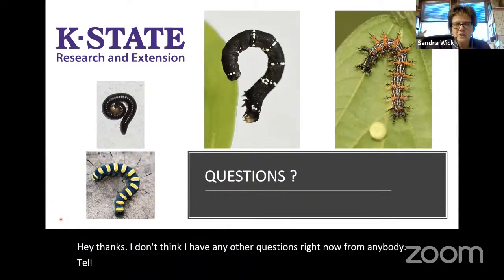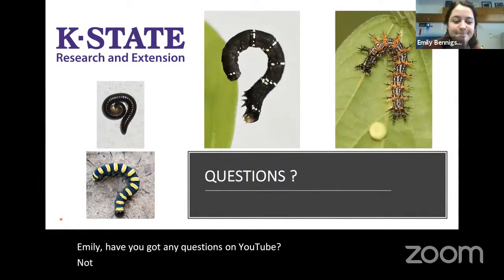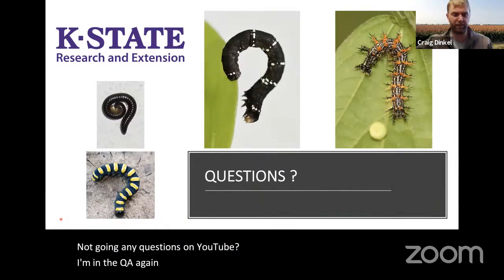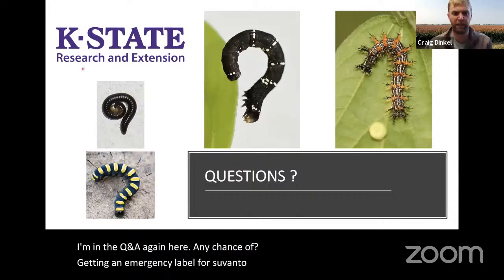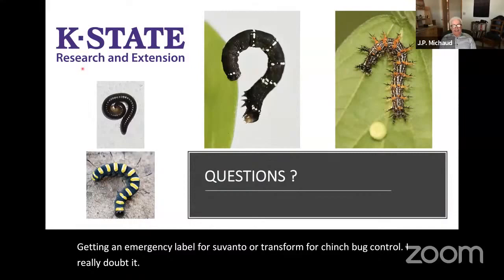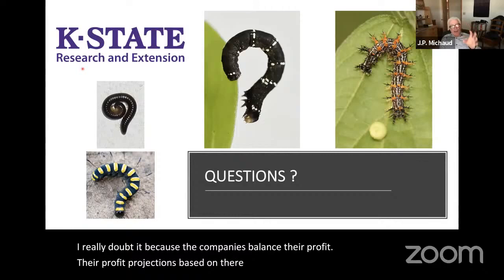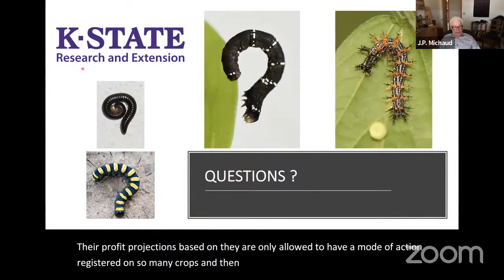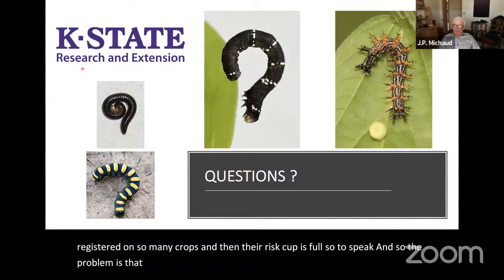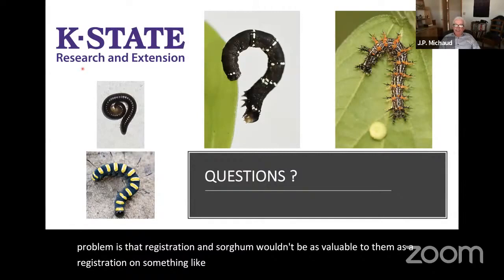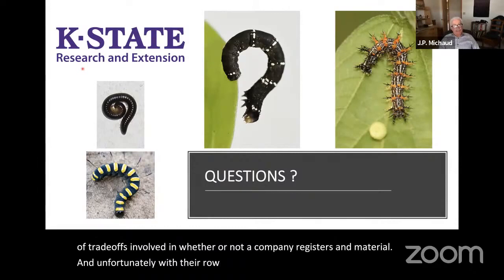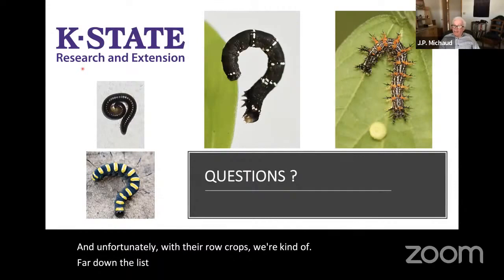Question: any chance of getting an emergency label for Sivanto or Transform for chinch bug control? I really doubt it, because companies balance their profit projections on how many crops a mode of action can be registered on, and a registration in sorghum wouldn't be as valuable to them as a registration on turf or a vegetable crop. With row crops, we're kind of far down the list in terms of a desirable market, and that's probably why we have so few miticides registered for corn as well.